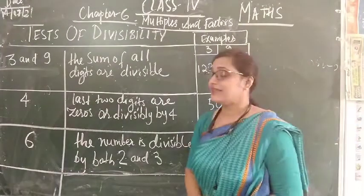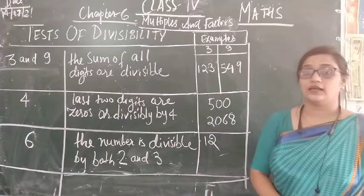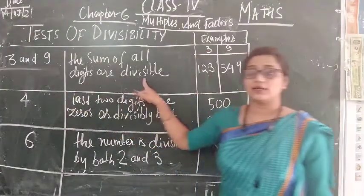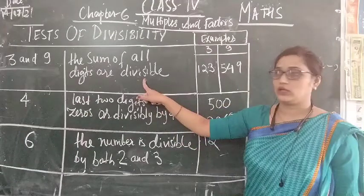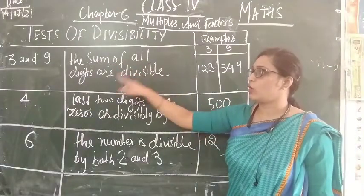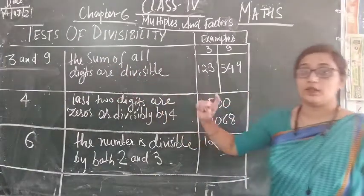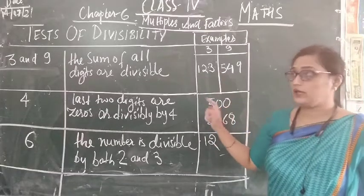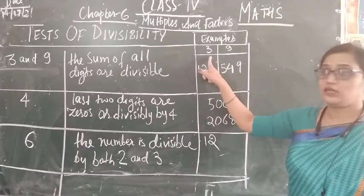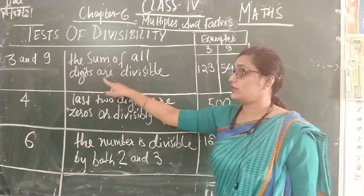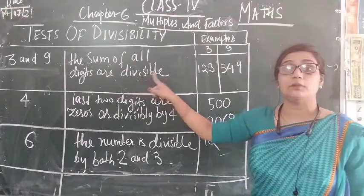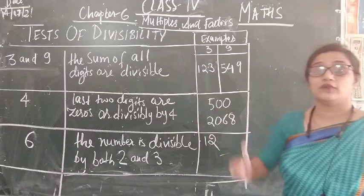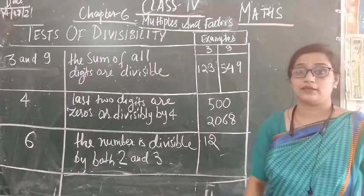First is the test of 3 and 9. We are keeping 3 and 9 together because their test is the same. The condition is: the sum of all digits should be divisible by 3 or 9. If we are talking about 3, the sum of all digits should be divisible by 3, and then we can say that the given number is divisible by 3.